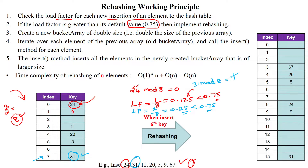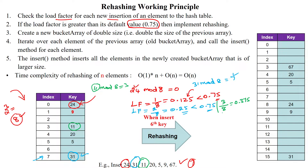I now insert the third element, 11, into the hash table. 11 mod 8 gives 3, so 11 is stored in the 3rd memory location. After inserting, the load factor is 3 out of 8, which gives 0.375. Comparing with the threshold value 0.75, it is still lower, so no need to implement rehashing.